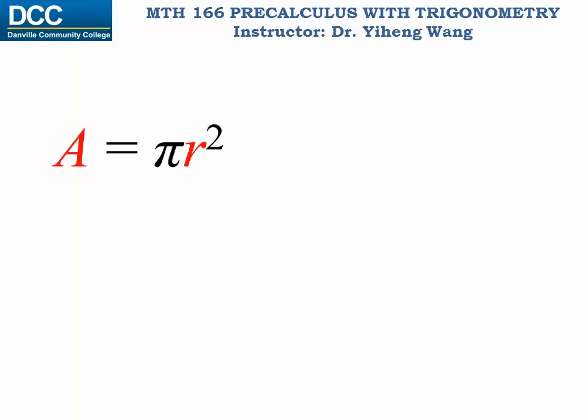So for this equation that describes how the area of the circle can be determined by the radius of the circle, when we look at it as a function, the radius is the independent variable, or the input, and the area is the dependent variable, or the output.